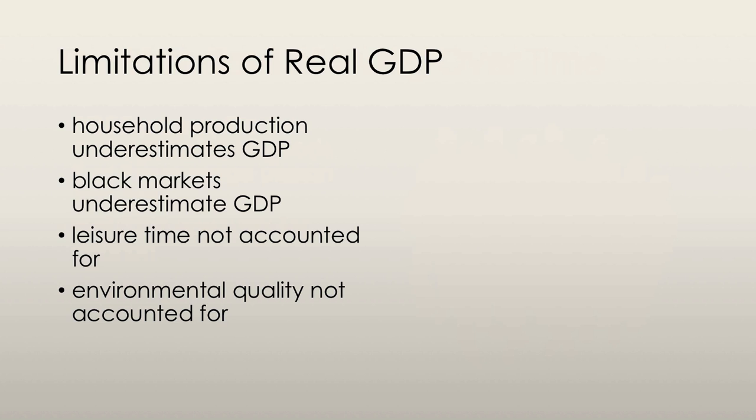The limitations of real GDP are quite important. Household production underestimates GDP. Household production includes things like preparing meals and doing chores. These activities are not actually traded in markets, and are thus not counted in GDP. These omissions result in an underestimation of total production.